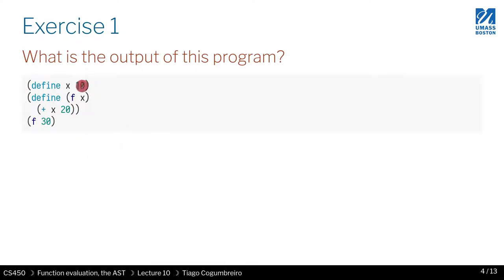This is a basic definition where we assign 10 to x. Then we define a function f that has a parameter x that returns x plus 20. Now your objective is to try to figure out what is going to be the result of calling f and passing 30 to it. Please pause the video to try to answer the question.